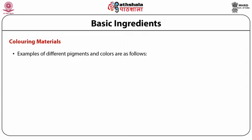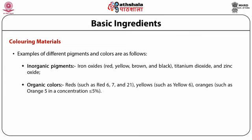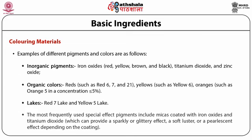Examples of different pigments and colours are inorganic pigments, which include iron oxides, titanium dioxide and zinc oxide, as well as organic colours and lakes. The most frequently used special effect pigments include micas coated with iron oxide and titanium dioxide, which can provide a sparkly or glittery effect, a soft lustre or a pearlescent effect depending on the coating, and bismuth oxychloride, which provides a pearlescent effect.